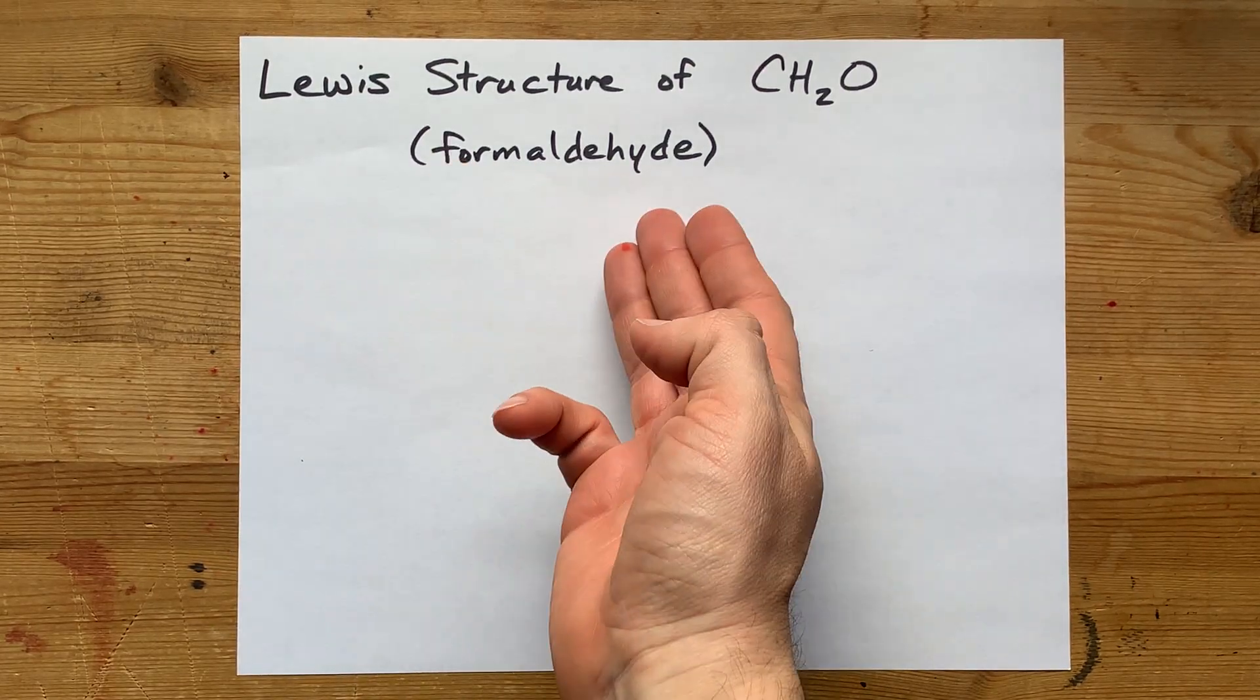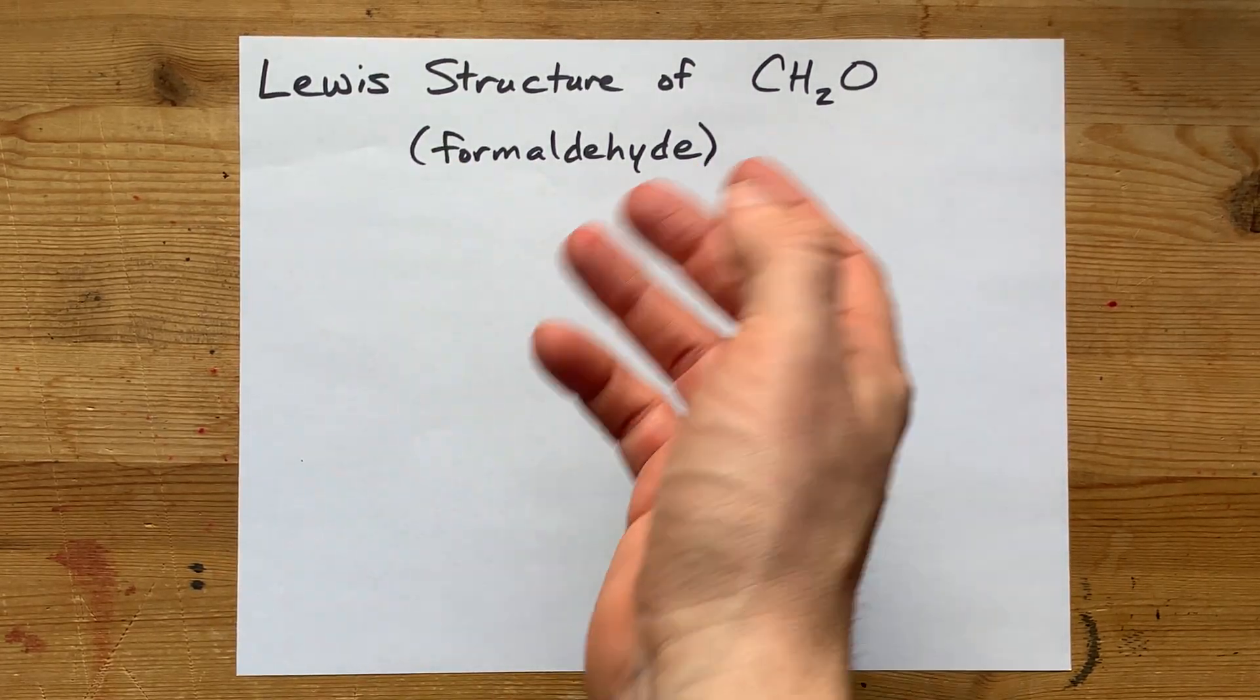Let's draw the Lewis structure for formaldehyde, which is CH2O.